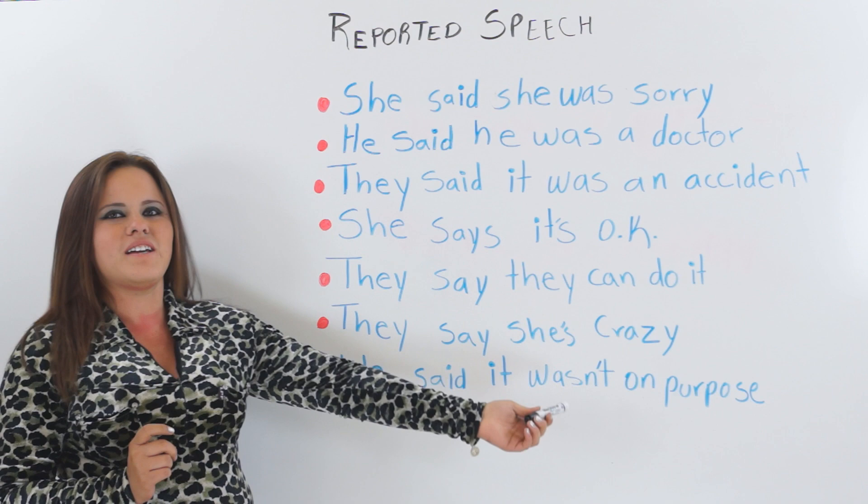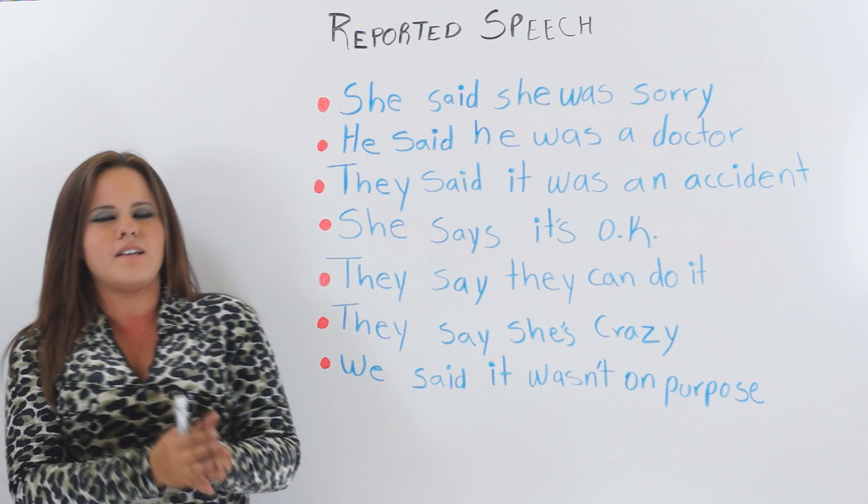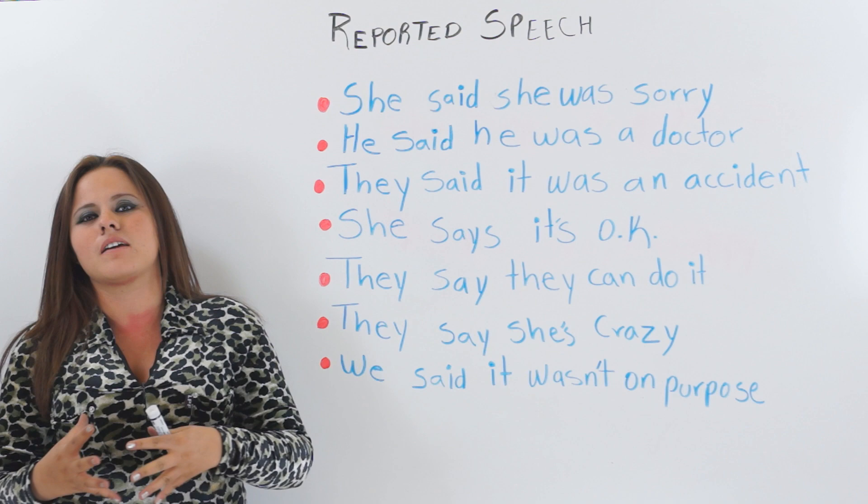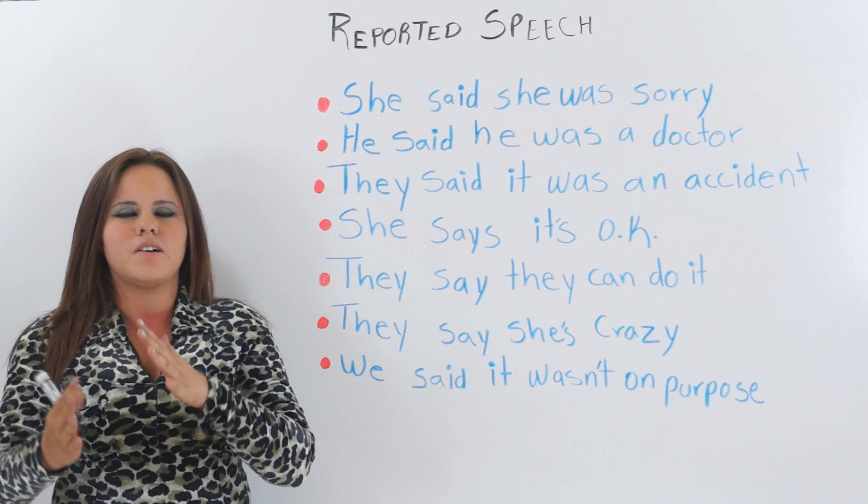They say they can't do it. They say she's crazy. We said it wasn't on purpose. You can use it in present or past. It's like gossip — reported speech is repeating something somebody else said. It's very easy. You just gotta see the tense they're talking in.